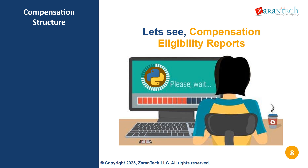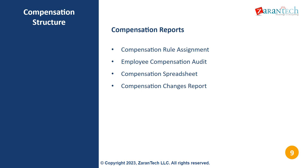Next up is compensation eligibility reports. There are several key compensation reports. Compensation rule assignment shows compensation plans assigned to workers. Employee compensation audit summarizes each worker's compensation. Compensation spreadsheet exports compensation data. Compensation changes report tracks modifications to compensation.